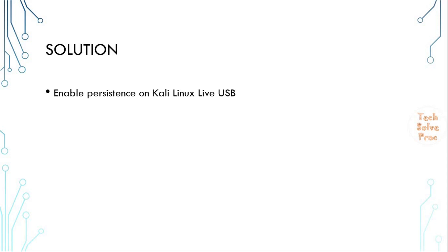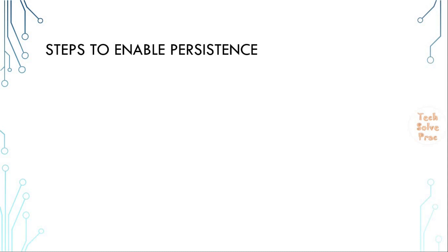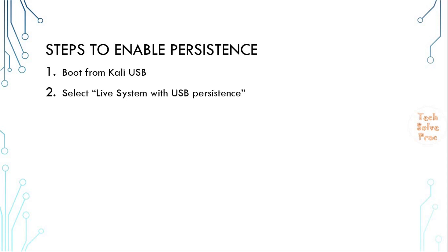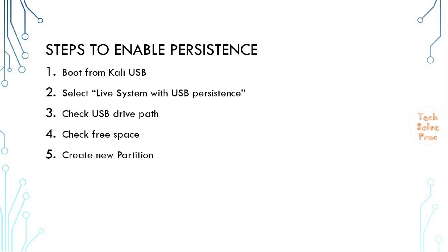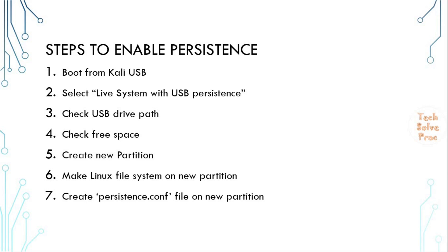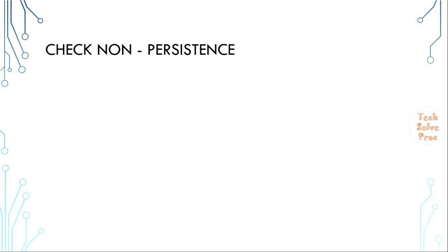The solution is to enable persistence on this Kali Linux Live USB. The steps involved are: first, boot from the Kali Linux Live USB and select the 'Live system with USB persistence' option. Then check the USB drive path and verify free space is available. Create a new partition in the free space, make a Linux file system on that partition, create a file named persistence.conf, and write '/union' to that file. Save the file, then reboot.